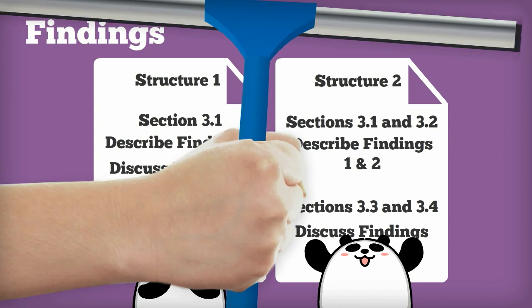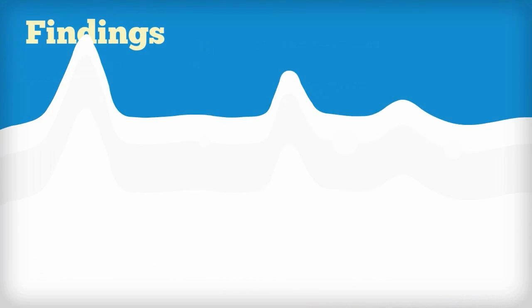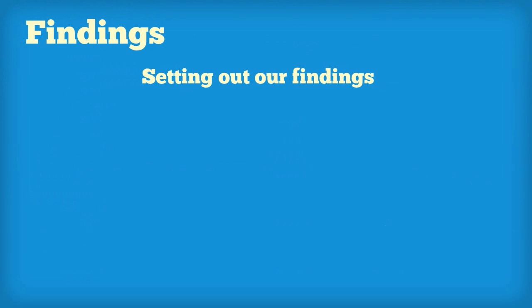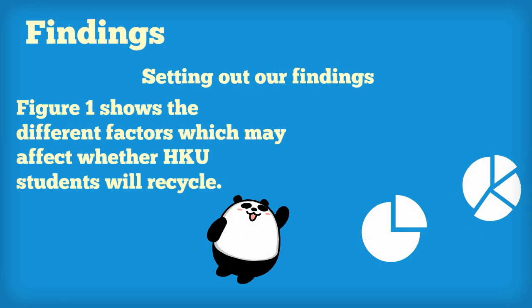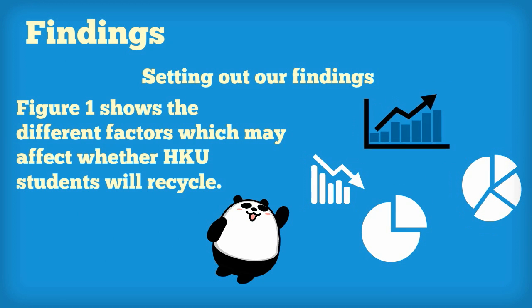Now, let's look at how to set out the findings. First, explain to the audience which part of the data we'll be looking at. It's very useful to include tables and charts to display information more clearly and effectively. You use these as well as the wording in your report to describe the data to your reader.